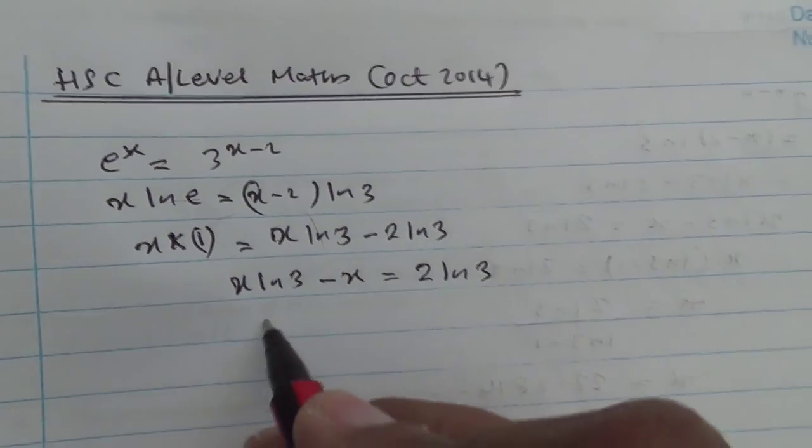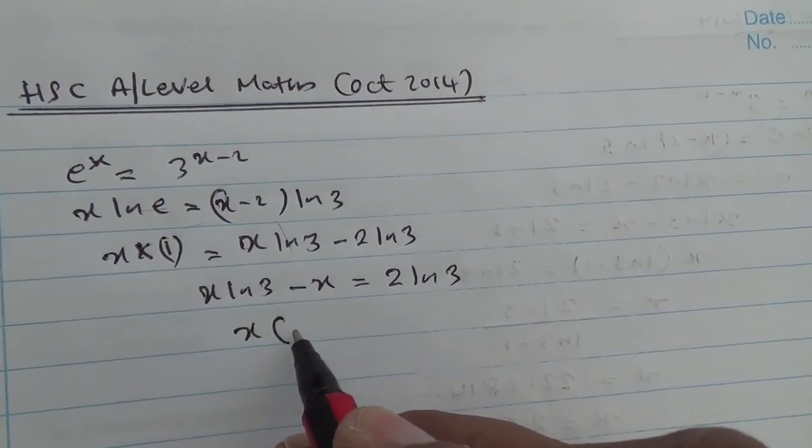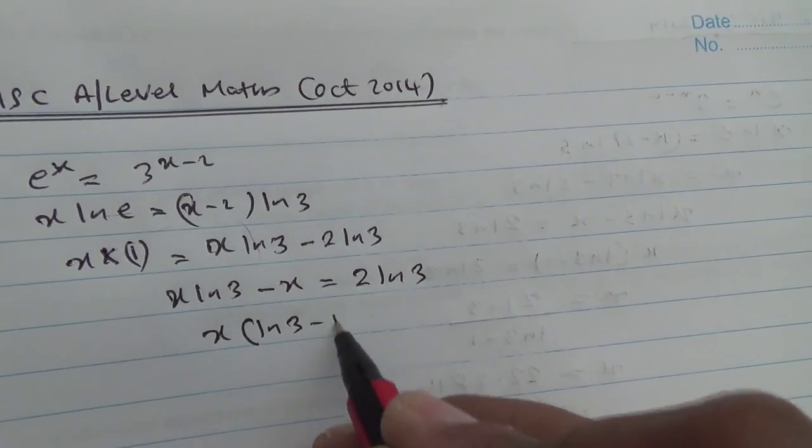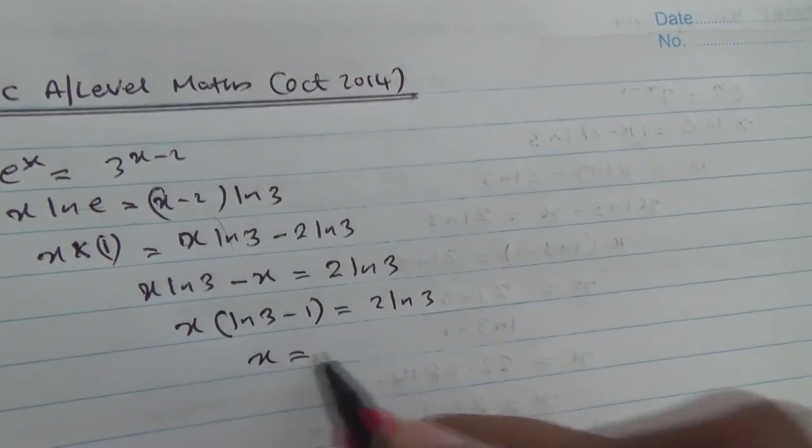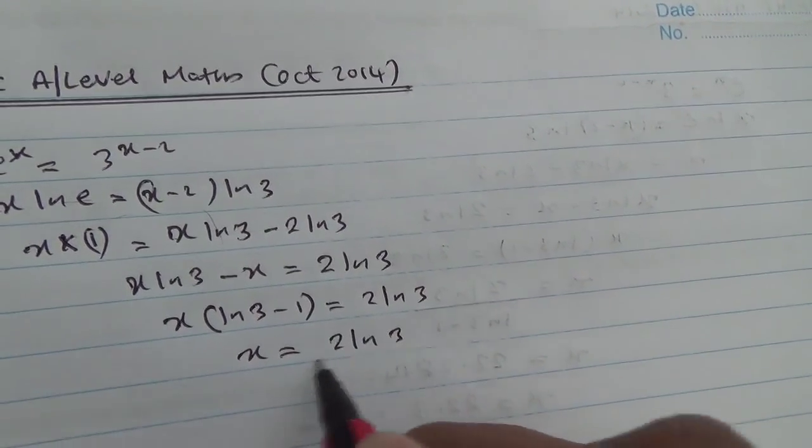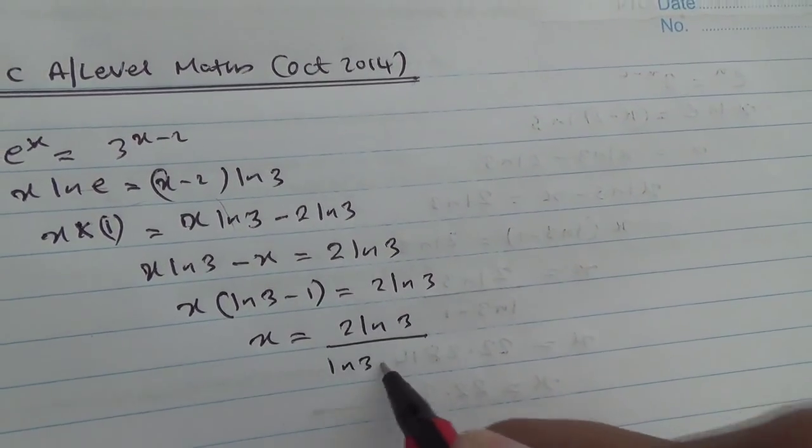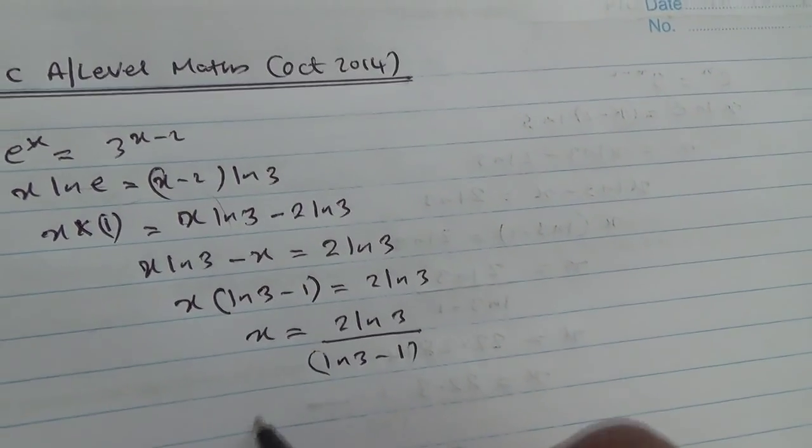Hence, we have x is common, therefore x is going to be taken outside. And we have ln 3 minus 1 in brackets is equal to 2 ln 3. Therefore, x is going to be 2 ln 3 all divided by ln 3 minus 1.